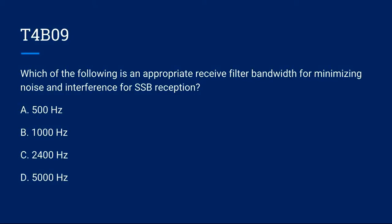T4B09: Which of the following is an appropriate receive filter bandwidth for minimizing noise and interference for single sideband reception? A. 500 Hz. B. 1000 Hz. C. 2400 Hz. Or D. 5000 Hz.